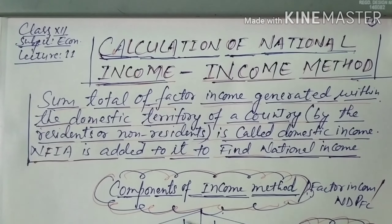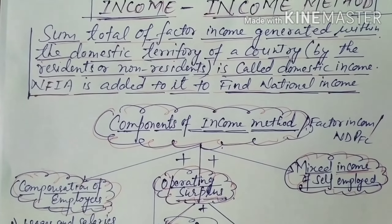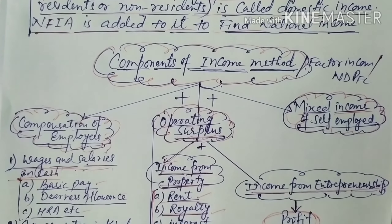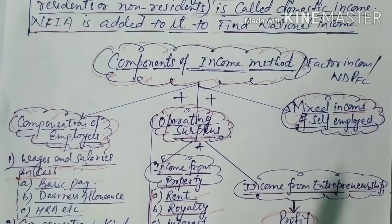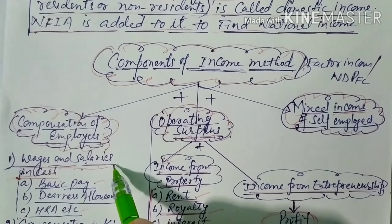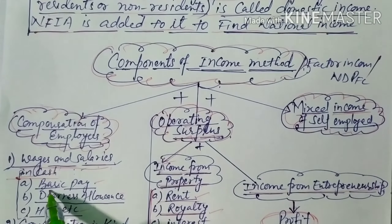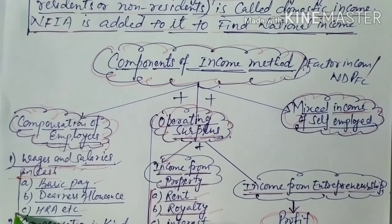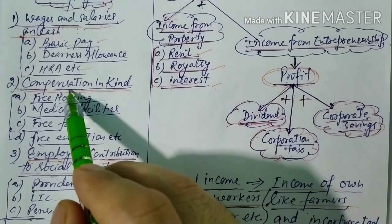There are different components of the income method; let us discuss them one by one. The first component is compensation of employees. Under this, there are different sub-components. First, wages and salaries in cash — this means basic pay, dearness allowance, HRA — they are all included. Second is compensation in kind.